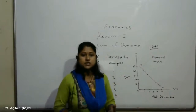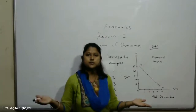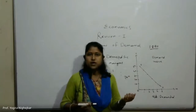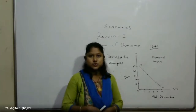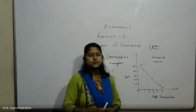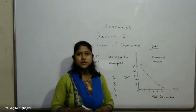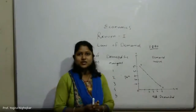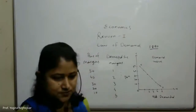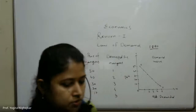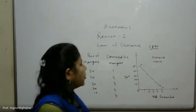Habit of consumption is another exception — certain goods like tea are purchased in required quantities even at a higher price. If someone has a habit of consuming a good, even if its price is high, they will still use it. For example, tea lovers will demand tea even if its price increases. I hope you all understand this Law of Demand.